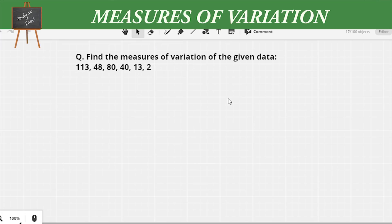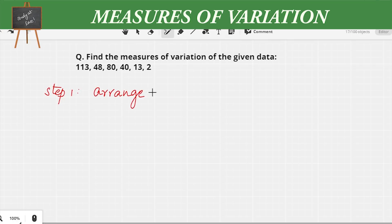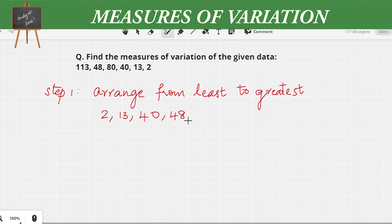Now let's try a question to understand these terms better. The question says: find the measures of variation of the given data. The numbers are 113, 48, 80, 40, 13, and 2. Step one is to arrange the numbers from least to greatest, that is in ascending order. So the arranged sequence is: 2, 13, 40, 48, 80, and 113.